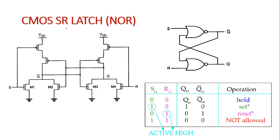Next we are going to discuss the CMOS SR latch using a NOR gate. This is the logic diagram of the SR latch with NOR gates. Using this gate-level SR latch, we are going to design a CMOS SR latch. You can refer to my previous video on CMOS fundamentals, which explains that for a NOR gate, NMOS transistors are in parallel and PMOS transistors are in series. Here we have a two-input NOR gate.